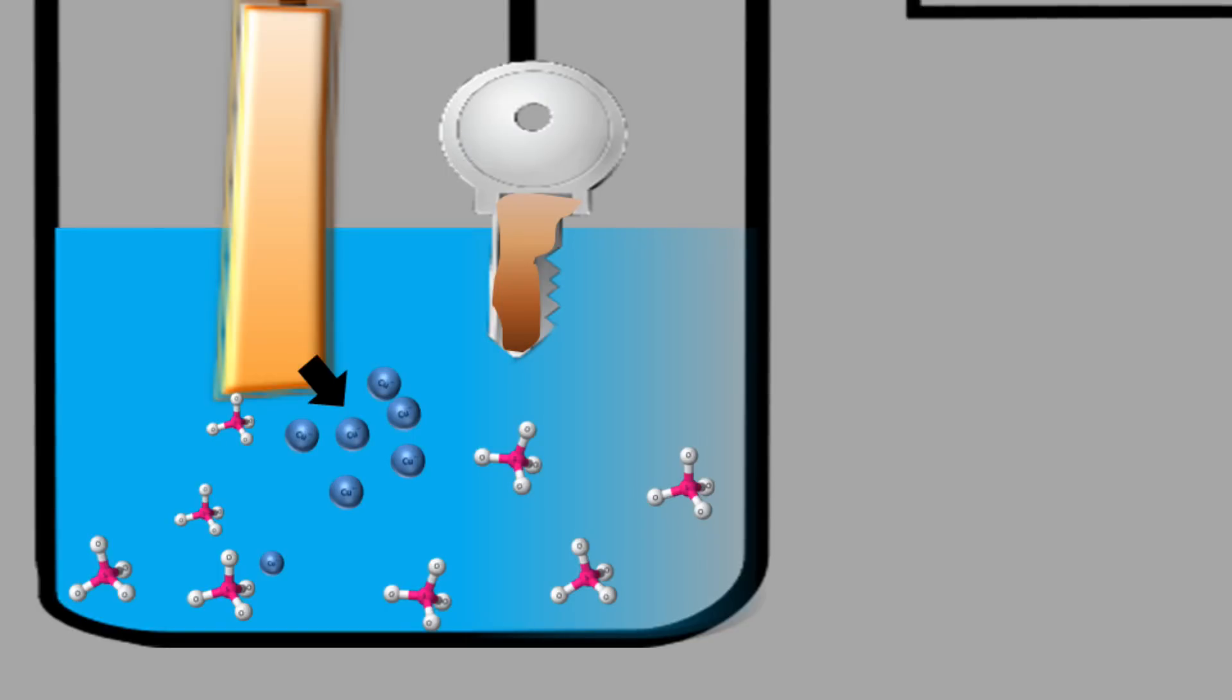When copper is deposited on the key, the copper plate supplies copper ions to the solution and that's why the copper plate starts eroding.